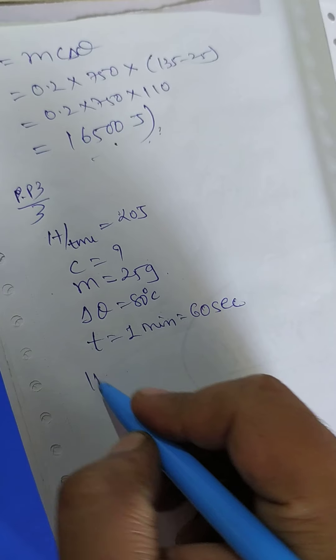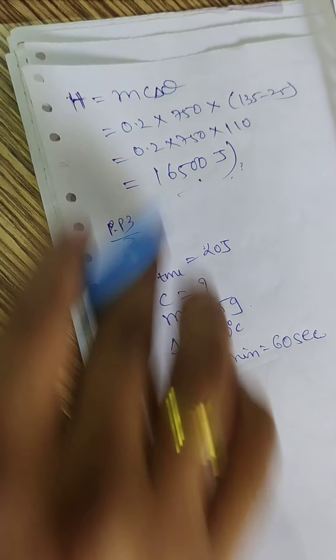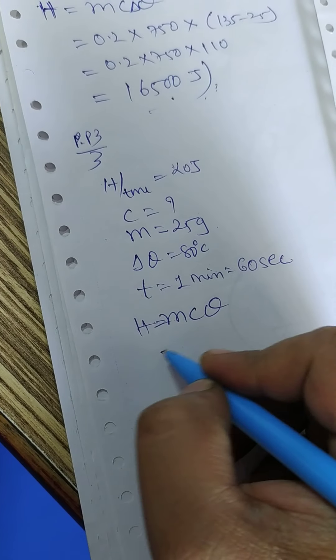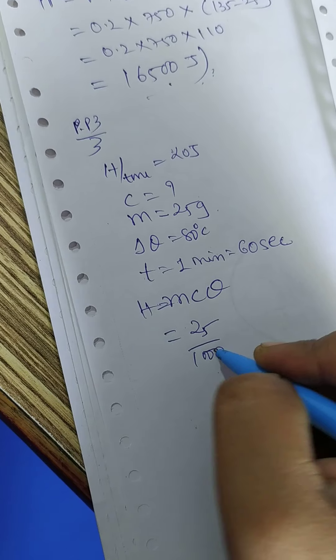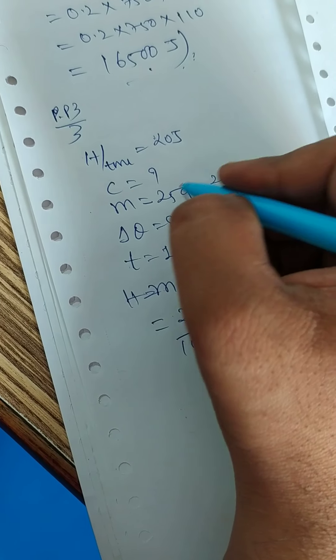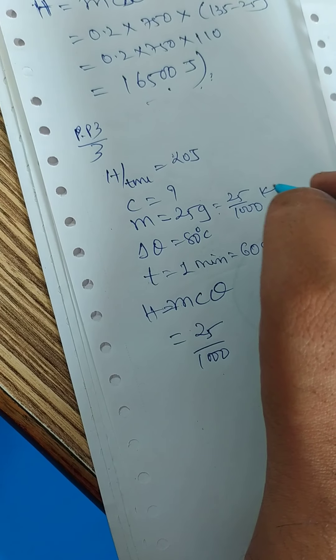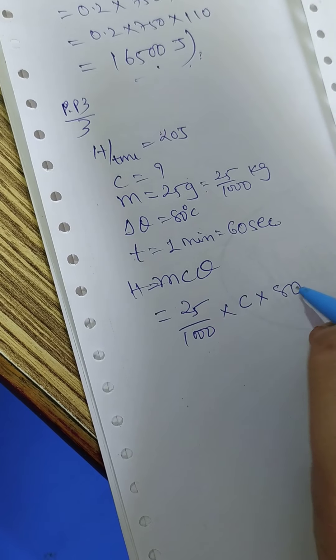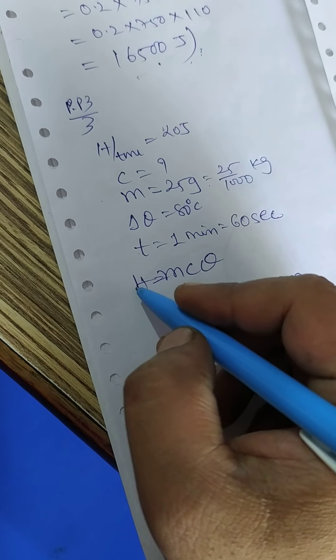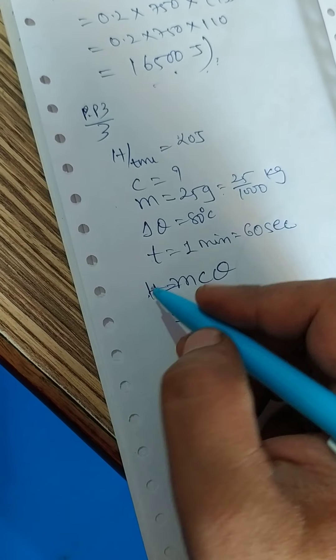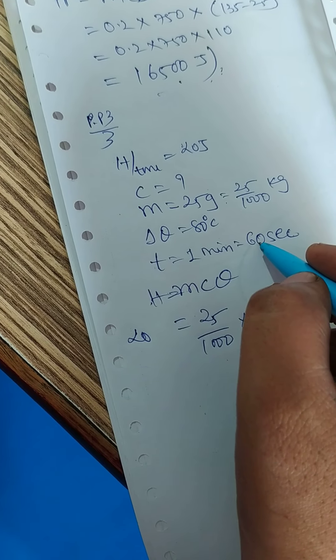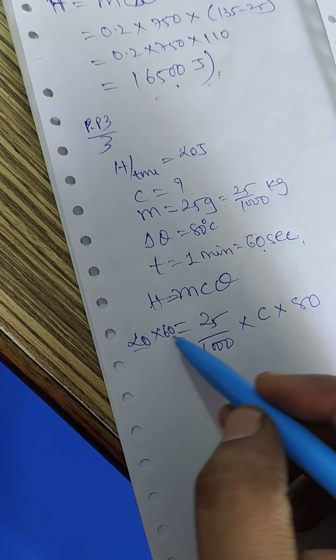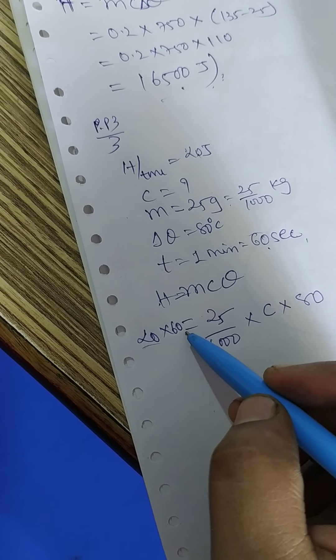Again making use of the formula for calorimetry, H is equal to mc theta. Mass is given as 25 grams. Convert it into kg. All should be converted into the SI unit. So converting gram into kg, dividing by 1000. So m, specific capacity we don't know, we have to calculate. And theta is directly 80 degrees. And the heat energy, how much heat energy the burner has given out? 20 joules every second. And that for 60 seconds. So 20 joules every second and totally for 60 seconds, 1200 joules of heat is liberated.